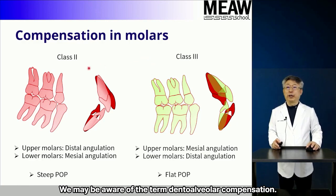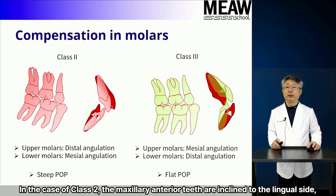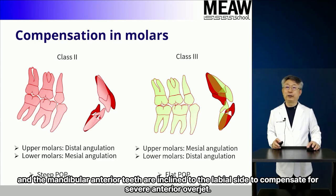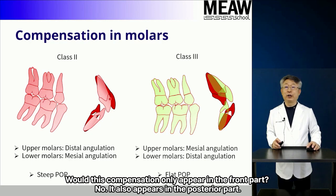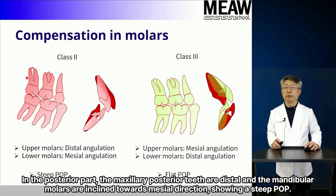We may be aware of the term dental alveolar compensation. In the case of class 2, the maxillary anterior teeth are inclined to the lingual side, and the mandibular anterior teeth are inclined to the labial side to compensate for severe anterior overjet. This compensation also appears in the posterior part: the maxillary posterior teeth incline distally and the mandibular molars incline towards the mesial direction, showing a steep POP.